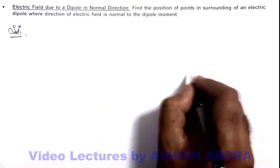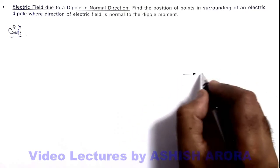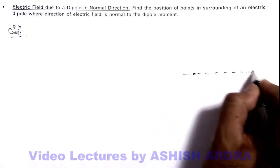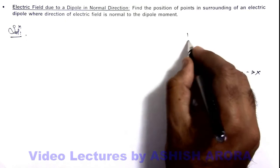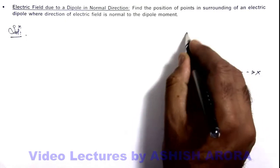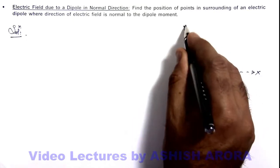First we can draw a dipole. Say the dipole is placed along the x-axis of a coordinate system, and we consider the y-axis of the coordinate system is normal to the dipole.